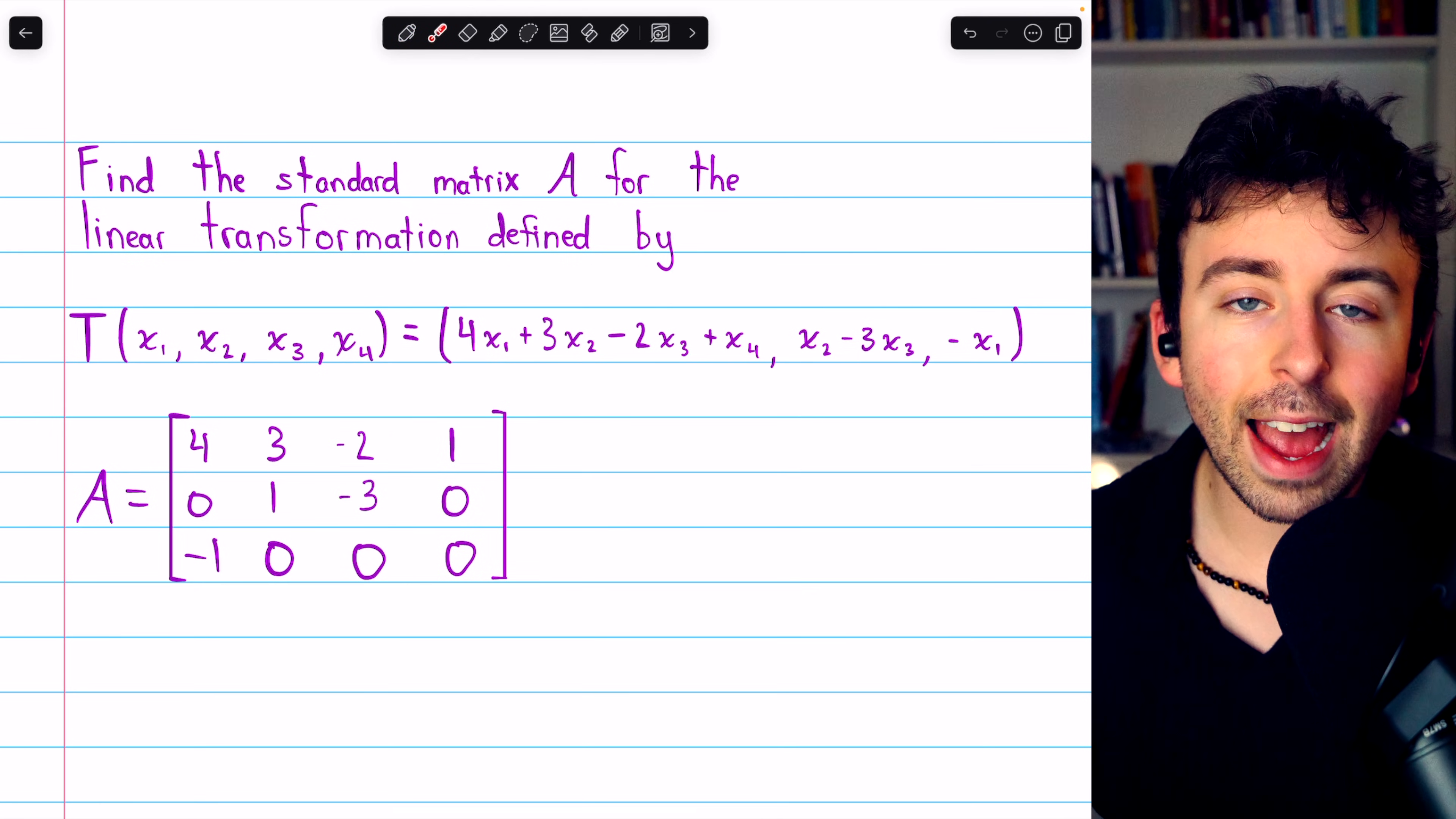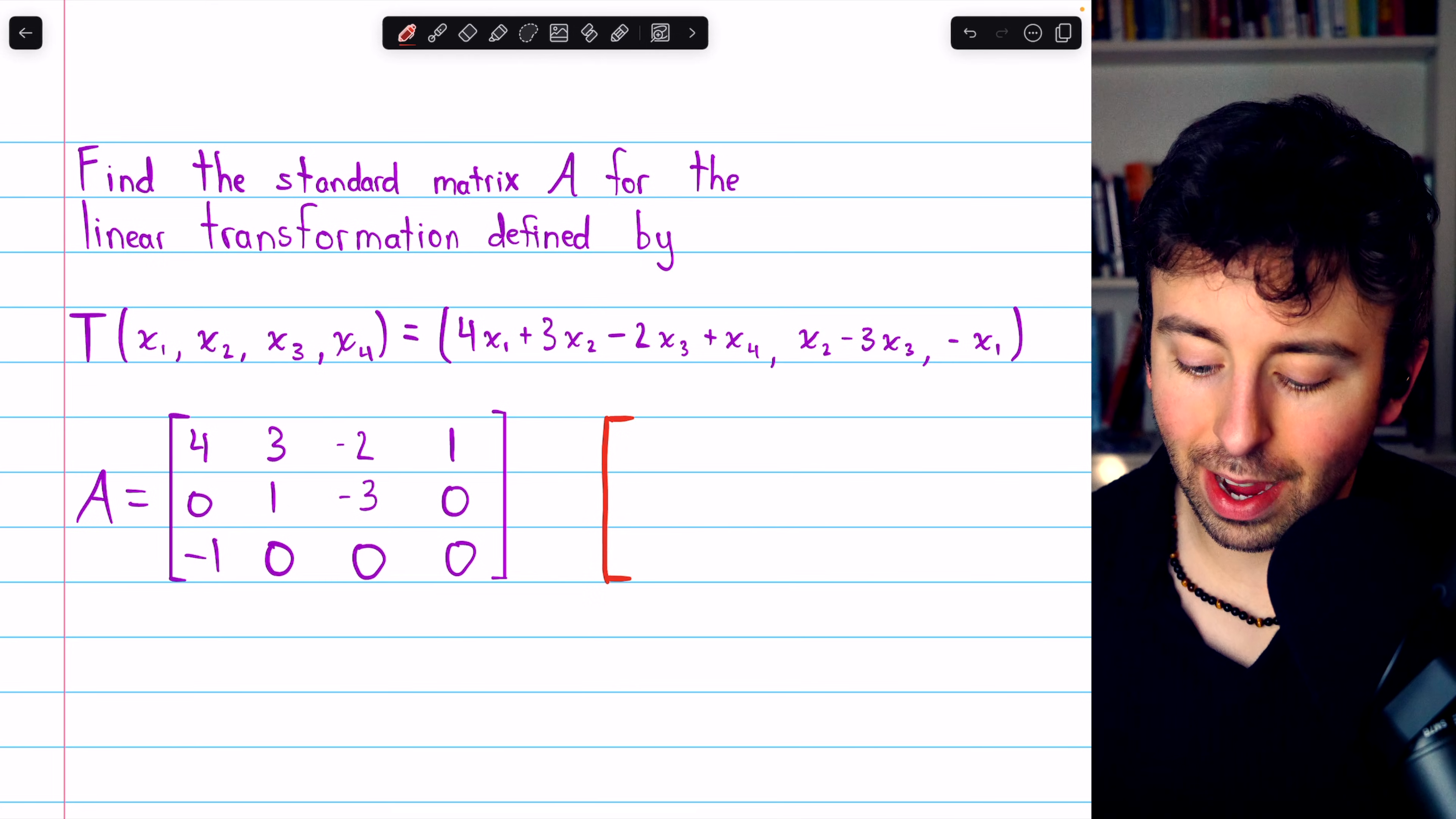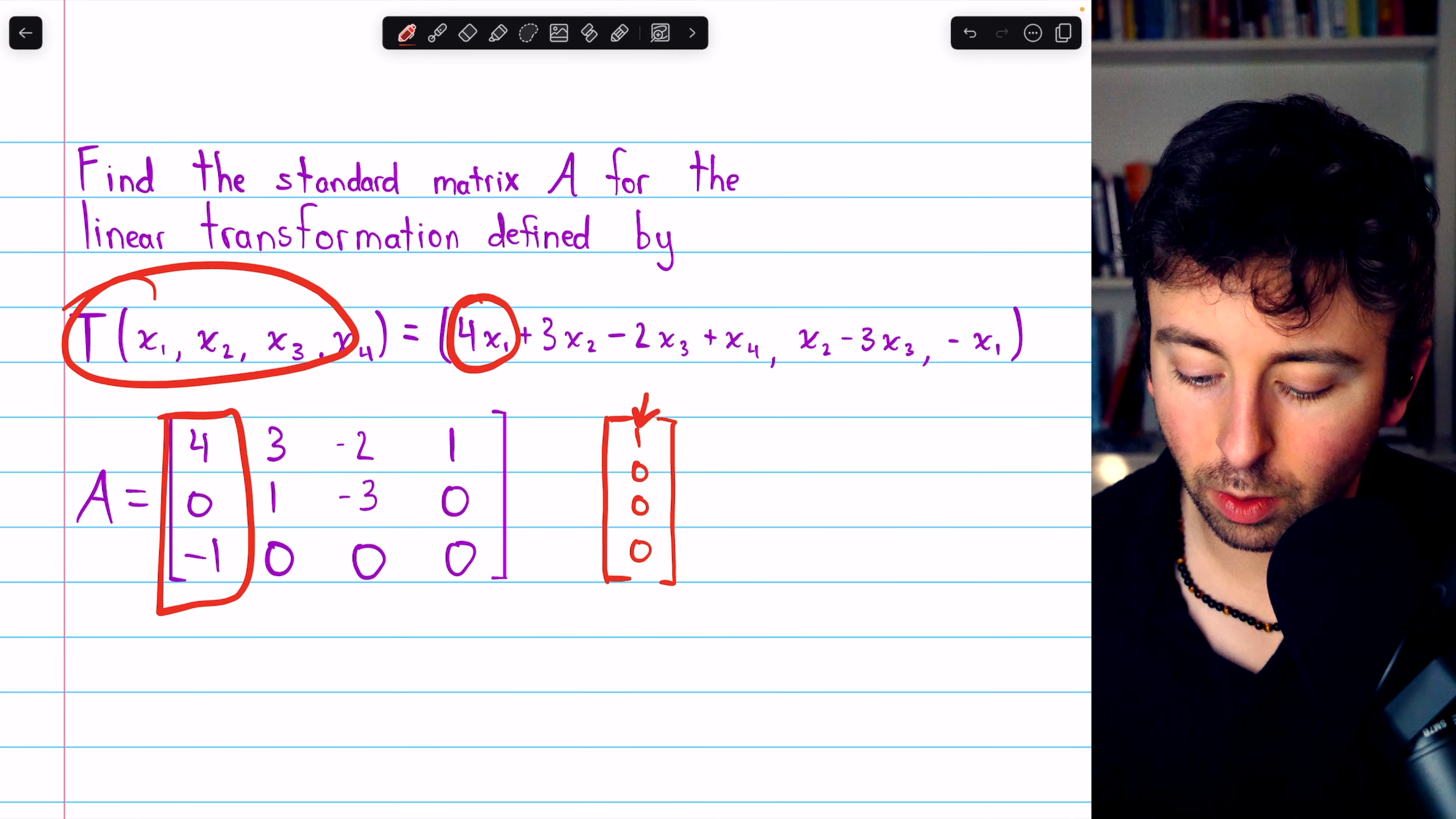You can see that it's the exact same two-step process we described at the beginning of the video, but done much more efficiently. If we were to input the standard basis vector (1, 0, 0, 0) into this transformation, you can see that this is the column we would end up with.